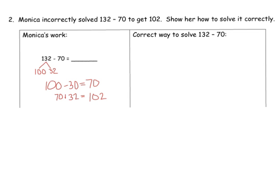Now, I chose this problem because doing error analysis is sometimes confusing for some people. It says Monica incorrectly solved this to get 102, and our task is to figure out where she made her mistake. So we can see she decomposed 132 correctly, but then when it came time to subtract, she subtracted 100 minus 30 when really she should have subtracted 100 minus 70.